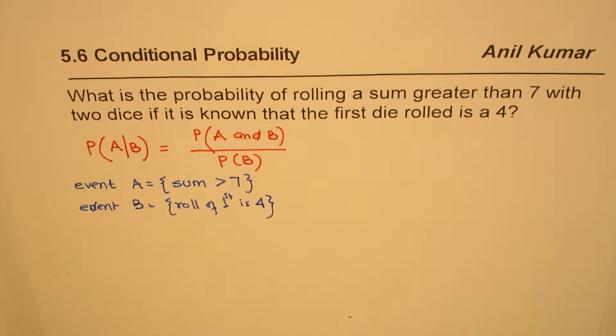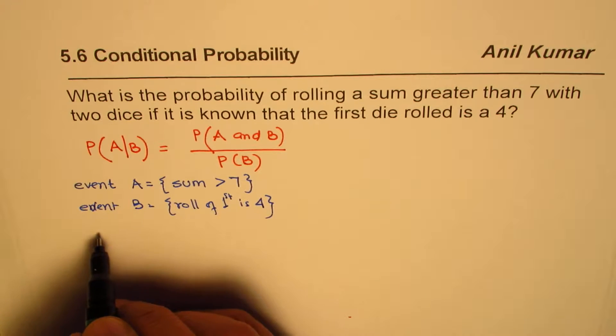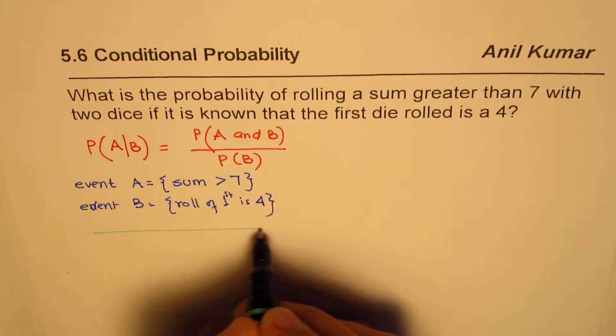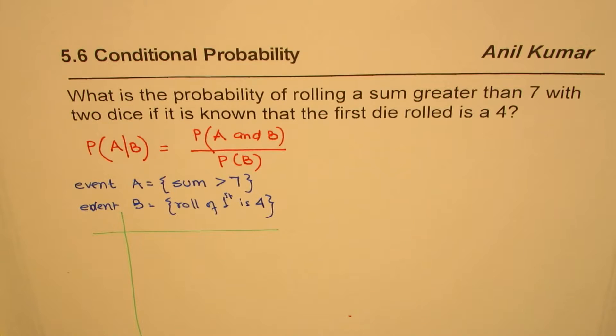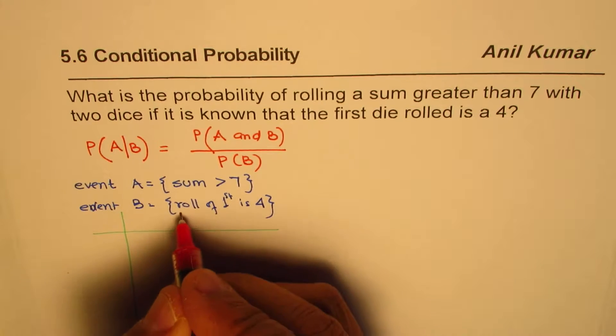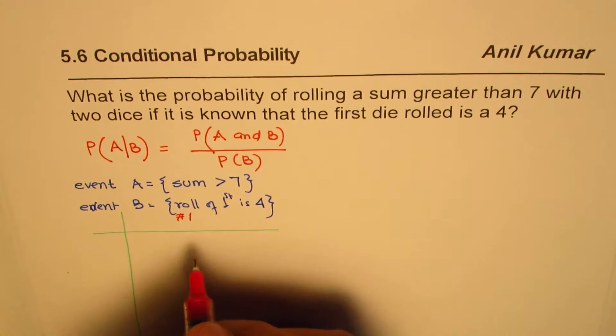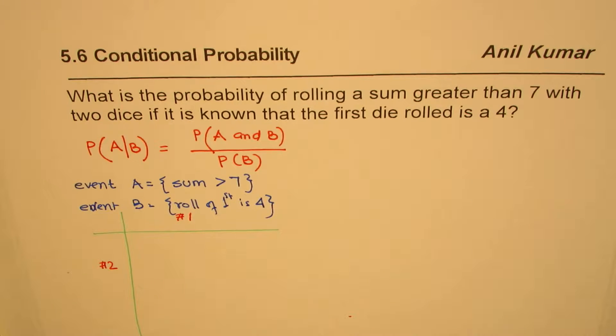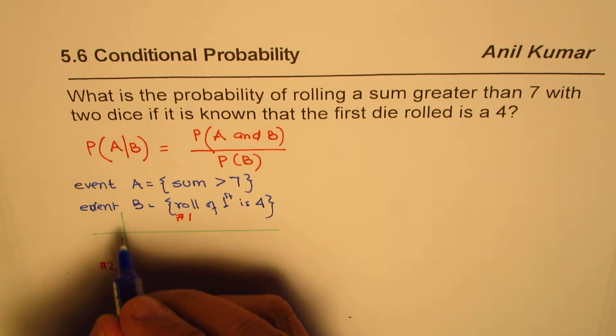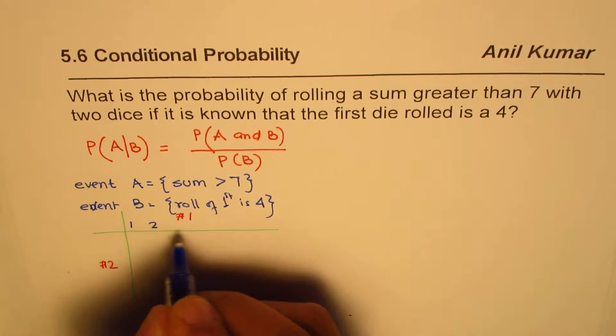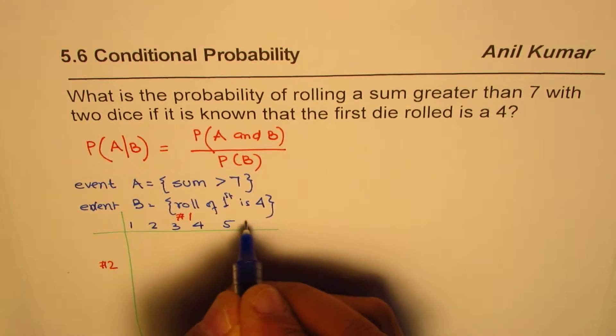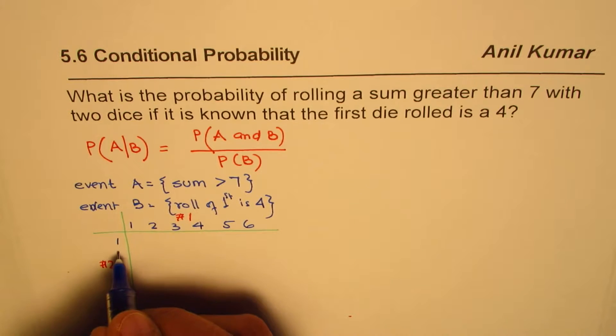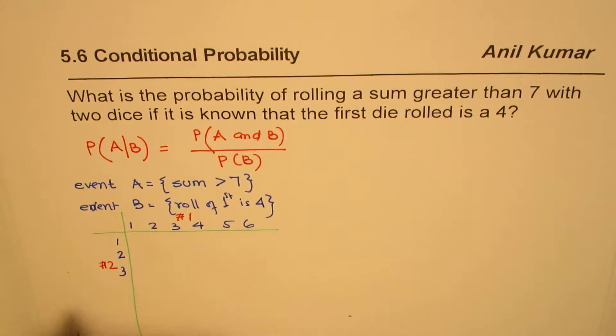So whenever you roll two dice, it's a good idea to actually make a matrix and try to understand the situation. So we'll make our matrix here with two dice. We'll put die number one numbers on this side and for two on the other side. The numbers on the die, as you know, are 1, 2, 3, 4, 5, and 6. Both have same numbers. So these are standard dice. So 5 and 6.